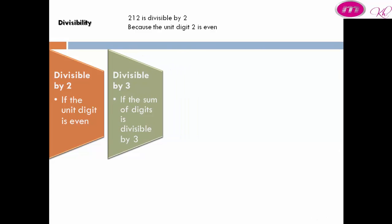Divisible by 3: a number is divisible by 3 if the sum of its digits is divisible by 3. For example, 120 is divisible by 3 because the sum of its digits is 3, and 3 is divisible by 3.